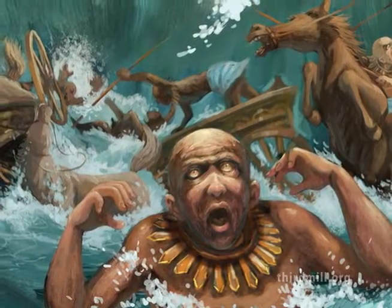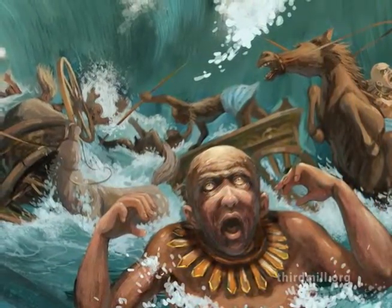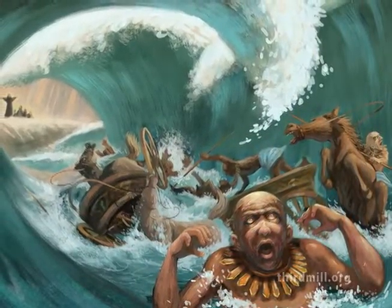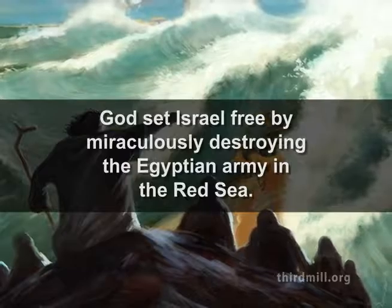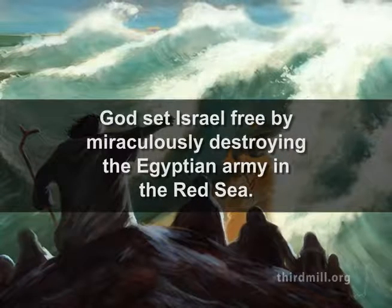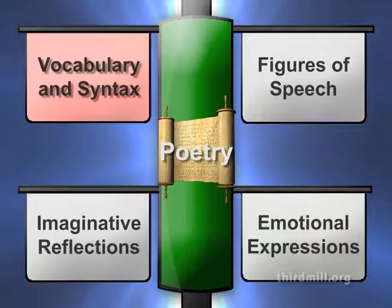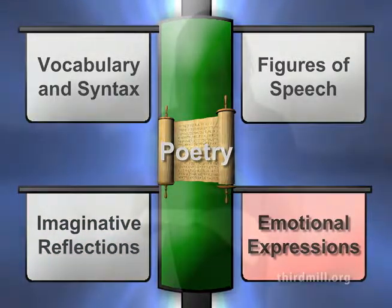Moses intended his poetry to be taken as a true record of the event, but he never meant it to be read as a literal wooden description. When we acknowledge the poetical features of Exodus chapter 15 verses 6 and 7, we can discern his historical information with relative ease. We might summarize these verses in a variety of ways — for example, if we were to focus on the way it uses figures of speech to relate historical data, we might say: 'God set Israel free by miraculously destroying the Egyptian army in the Red Sea.' This example makes it clear that we must approach Old Testament poetry with care. We must distill historical information by recognizing poetry's unusual vocabulary and syntax, its figures of speech, its imaginative concerns, and its emotional impacts. Only then can we derive more realistic understandings of God's acts and words that contribute to our synchronic syntheses of Old Testament theology.